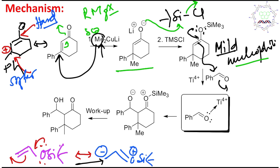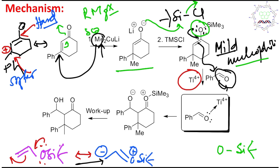Because it is a mild nucleophile, the silyl enol ether cannot directly attack the carbonyl compound. For that purpose, a strong Lewis acid is needed — like titanium(IV). Titanium(IV) coordinates with the aldehyde carbonyl oxygen. You might ask: why doesn't titanium coordinate to the silyl oxygen instead?